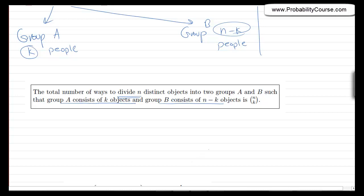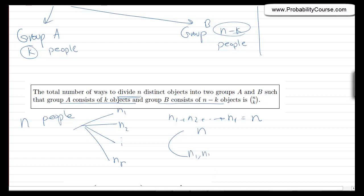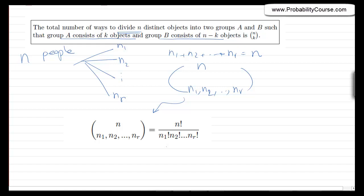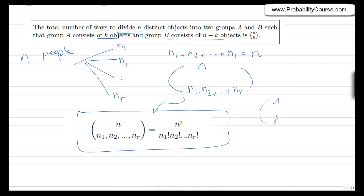We can generalize this to more than two groups. If you have n people divided into r groups where the first group has n1 people, the second has n2, and the last has nR, and n1 plus n2 up to nR equals n, then the number of ways to do this is n choose n1, n2, up to nR. The formula is n factorial divided by n1 factorial times n2 factorial and so on. When you have only two groups, this reduces to the n choose k formula. These are called multinomial coefficients.